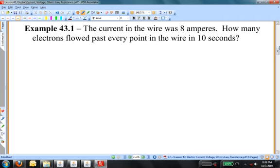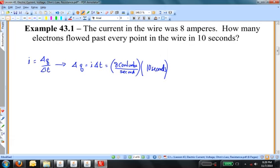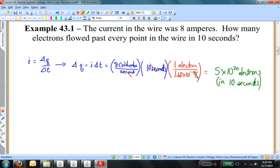Here's a numerical problem for you. The current in a wire was 8 amperes. How many electrons flowed past every point in the wire in 10 seconds? We start with our definition of current, I equals delta q over delta t. Let's recognize that an ampere is a coulomb per second, and I have one electron in every 1.60 times 10 to the minus 19 coulombs. Let's recognize that seconds are going to cancel, and the coulombs are going to cancel, and I'm going to be left with electrons. And I get that 5 times 10 to the 20 electrons is how many pass by this point in the circuit in 10 seconds.